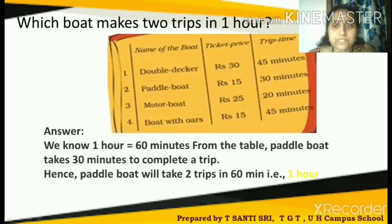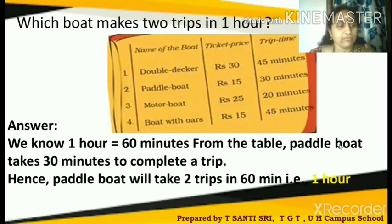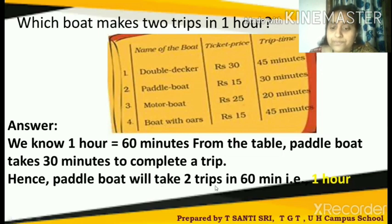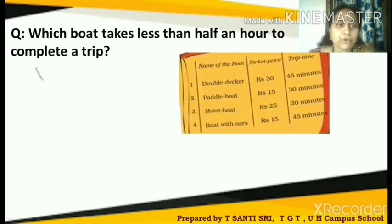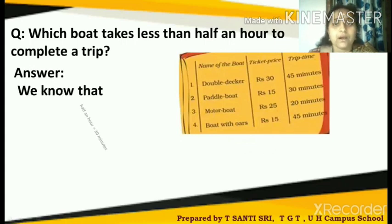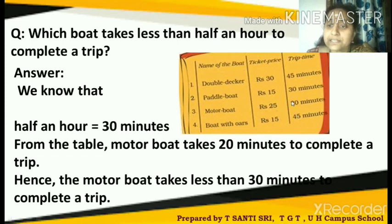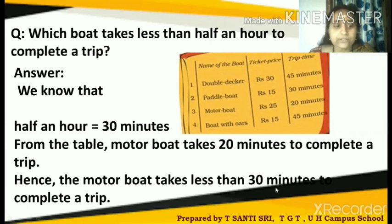Which boat makes two trips in one hour? One hour means 60 minutes. From the table, the paddle boat takes 30 minutes to complete a trip. So 30 plus 30 equals 60 minutes — hence the paddle boat makes two trips in 60 minutes, which is one hour. Which boat takes less than half an hour to complete a trip? Half an hour means 30 minutes. The motor boat takes 20 minutes for the trip, hence the motor boat takes less than 30 minutes to complete a trip.